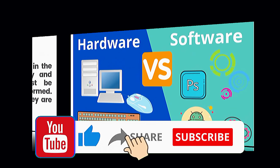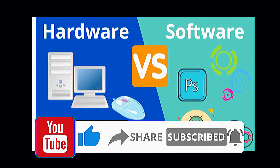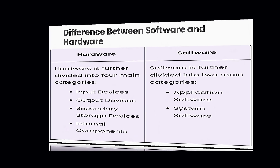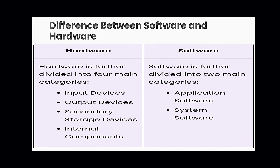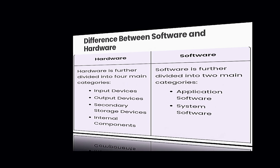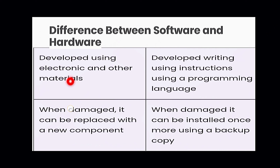Now we discuss hardware versus software — one by one we discuss the differences. Hardware is further divided into four main categories: input devices, output devices, secondary storage devices, and internal components. Software is divided into two main categories: application software and system software. Hardware is developed using electronic and other materials, combining different electronic components. Software is developed by writing instructions using a programming language.